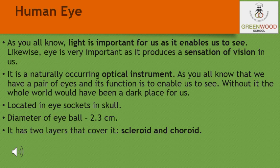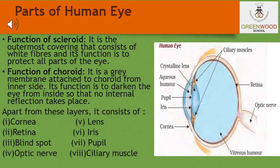The eyes are located in the eye sockets in the skull, and the eyeball is approximately spherical in shape with a diameter of about 2.3 cm. It has mainly two layers that cover it: the scleroid and the choroid. The scleroid is the outermost covering consisting of white fibers, and its function is to protect all parts of the eye. The choroid is the gray membrane attached from the inner side; its function is to darken the eye from the inside so that no internal reflection takes place.